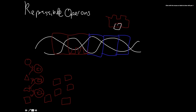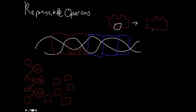One of these molecules binds to the repressor, causing the repressor to change shape. Once the repressor changes shape, it can bind to the operator. When the repressor binds to the operator, it turns off the genes — they won't be transcribed or translated, so the enzymes won't be made. Without those enzymes, the cell can no longer make the product, thus avoiding wasting energy or materials.